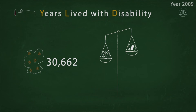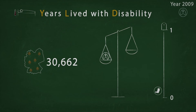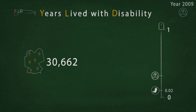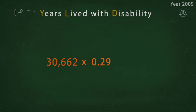Every disease has its own weighting factor called disability weight. Disability weights are anchored on a scale between 0 and 1: 0 stands for full health, and 1 is a state comparable to death. Years of life lost due to premature death are therefore weighted at 1, and years lived with a disability are weighted with a value below 1. For example, treated asthma has a disability weight of 0.02 and is not as severe as lung cancer, which has a disability weight of 0.29. With these numbers, we can quantify the YLDs: 30,662 people multiplied by 0.29 results in about 8,900 YLDs.